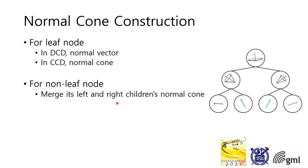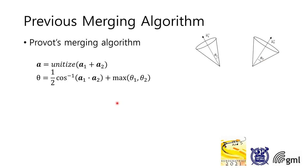Let's see the merging algorithm between two cones. The previous method proposed by Provot is quite simple. If there are two cones, first, find the central vector of axes of two cones.